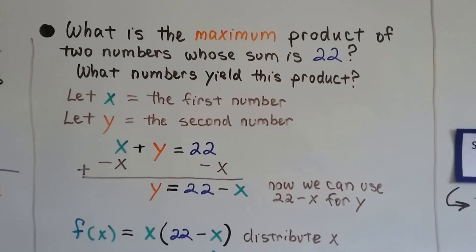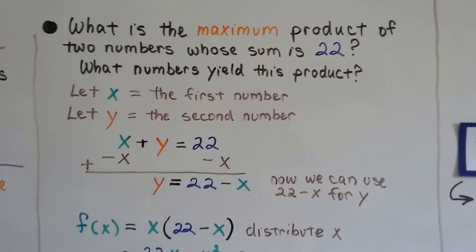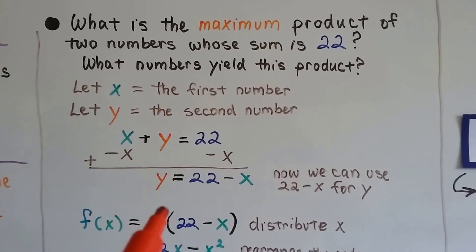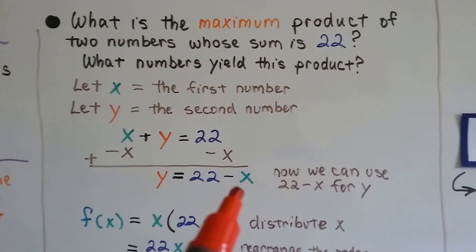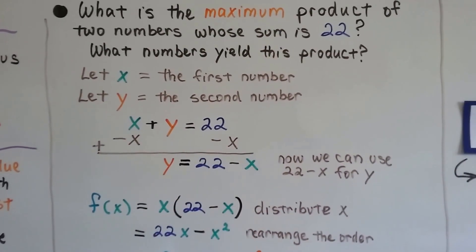We're going to let x equal the first number and y equal the second number. We've got x + y = 22. We can add a negative x to each side to isolate for y, and we get y = 22 - x. Now we can use 22 - x instead of y.